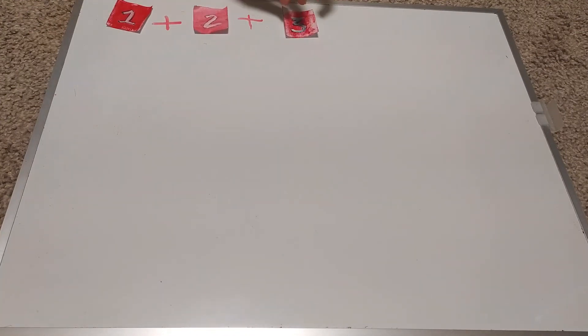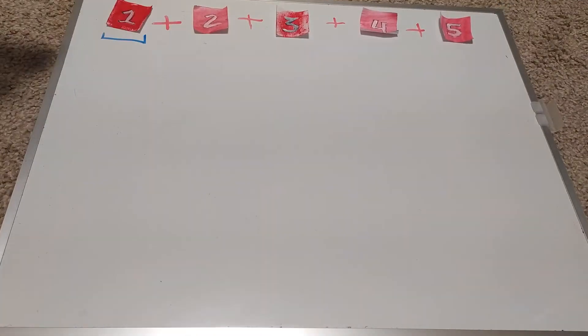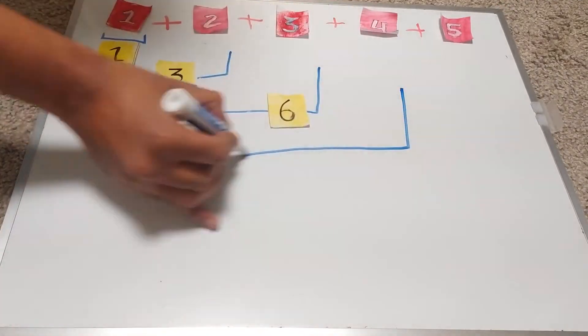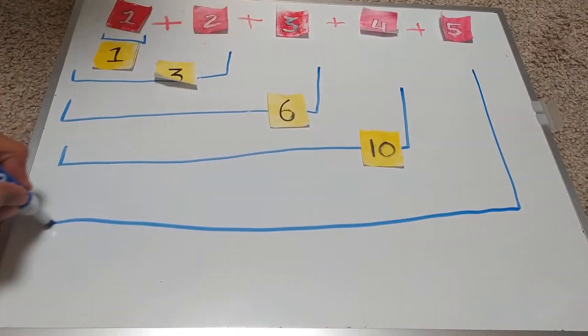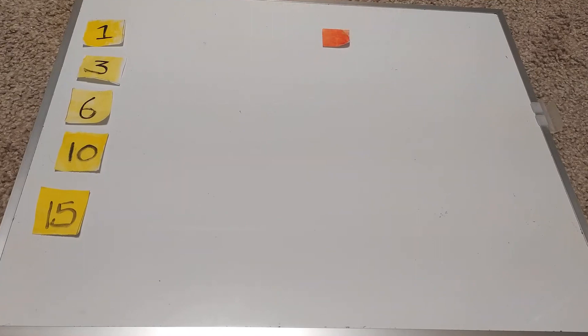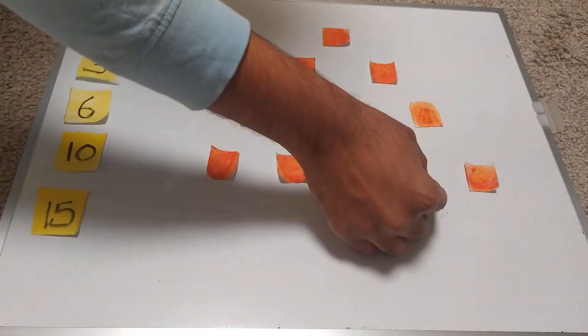When we add up the first few natural numbers, like 1 plus 2, plus 3 plus 4, and so on, the sums that we get are called triangular numbers. This is because these can be arranged into nice equilateral triangles, like this.